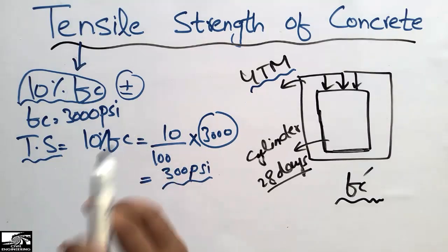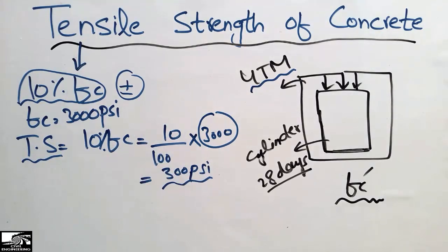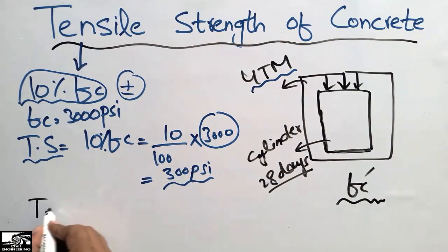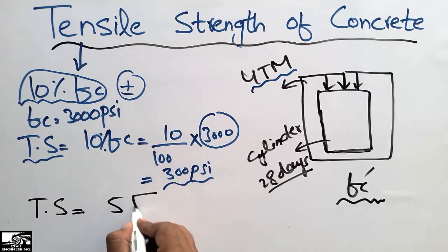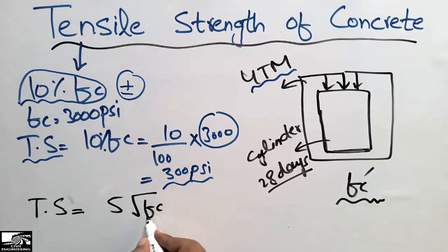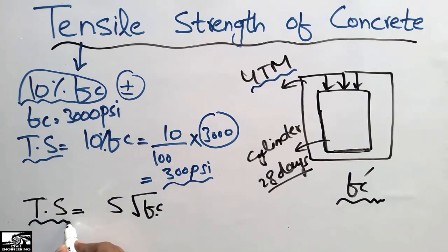There is another formula used to find out the tensile strength of concrete. This formula is: tensile strength = 5 × √fc, where fc is the compressive strength of the concrete. So if we know the compressive strength, we can find out the tensile strength using this formula.